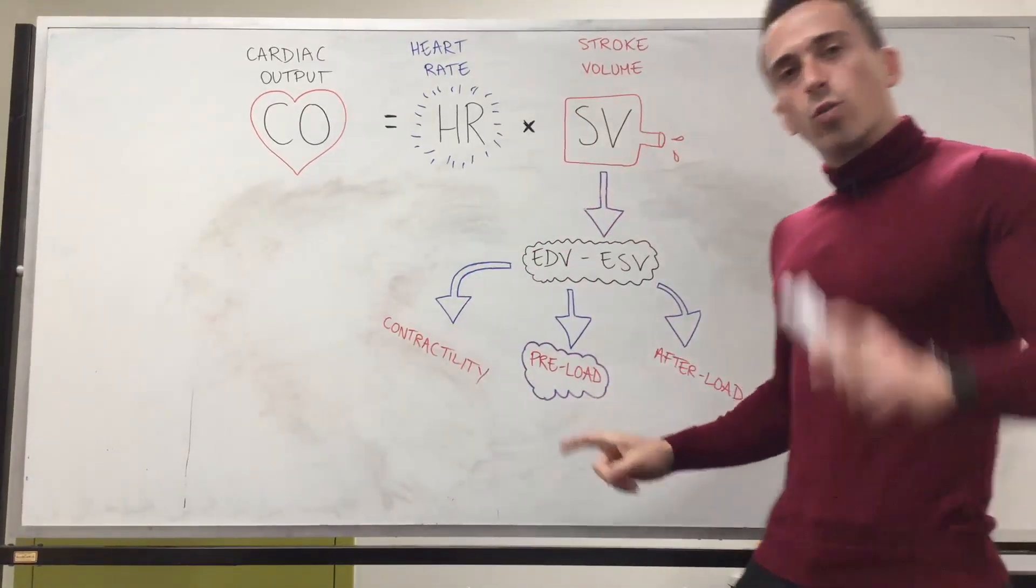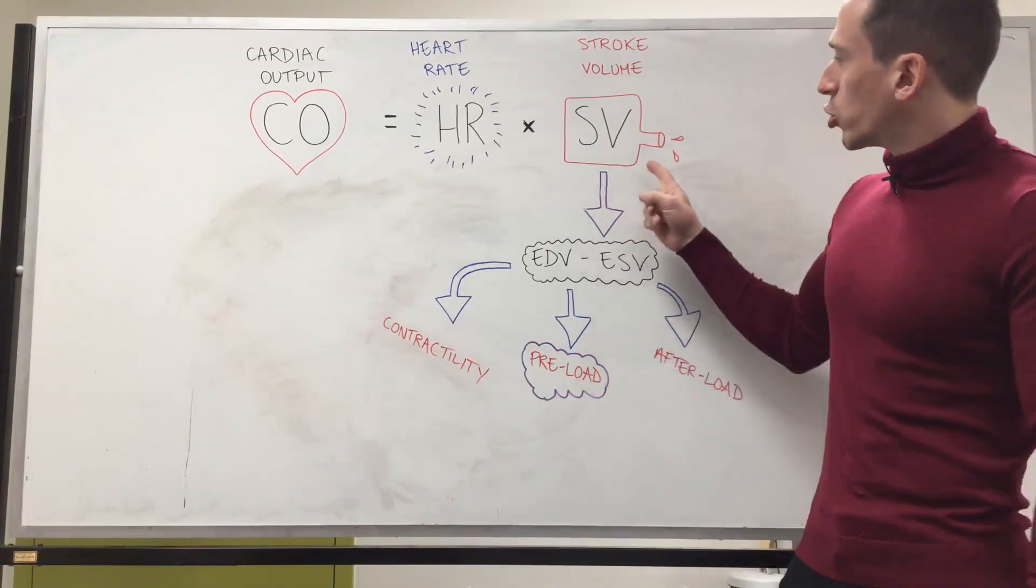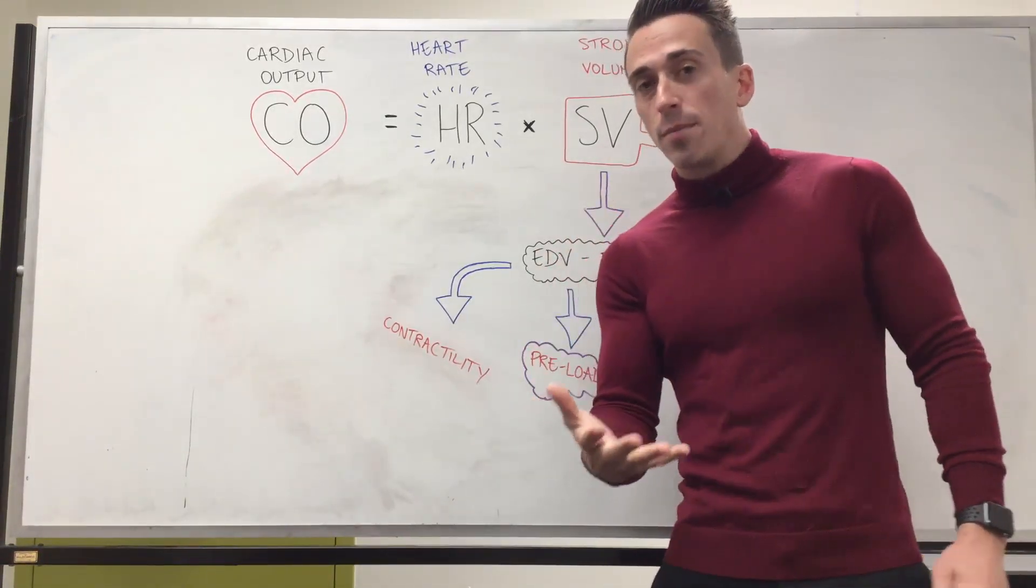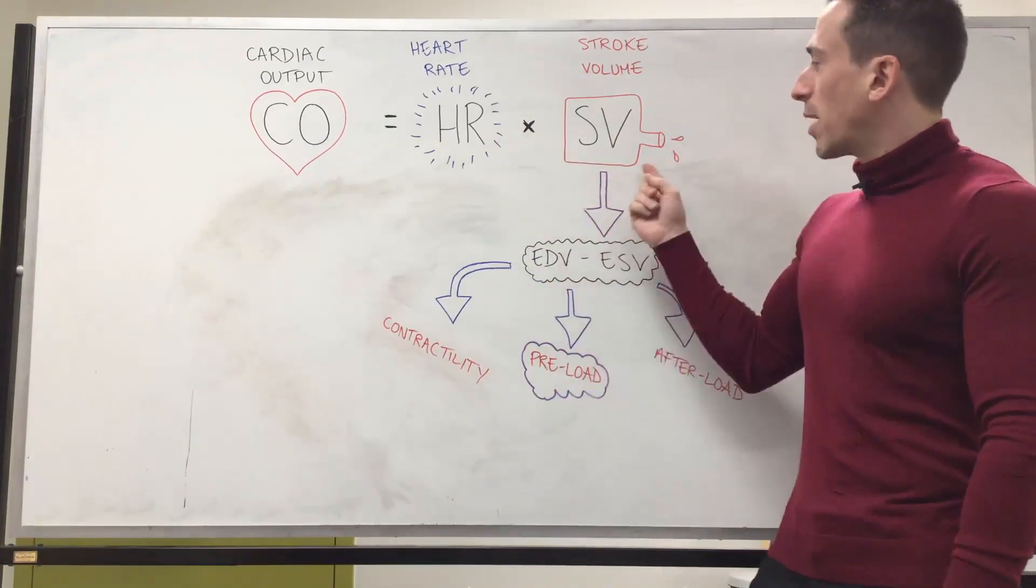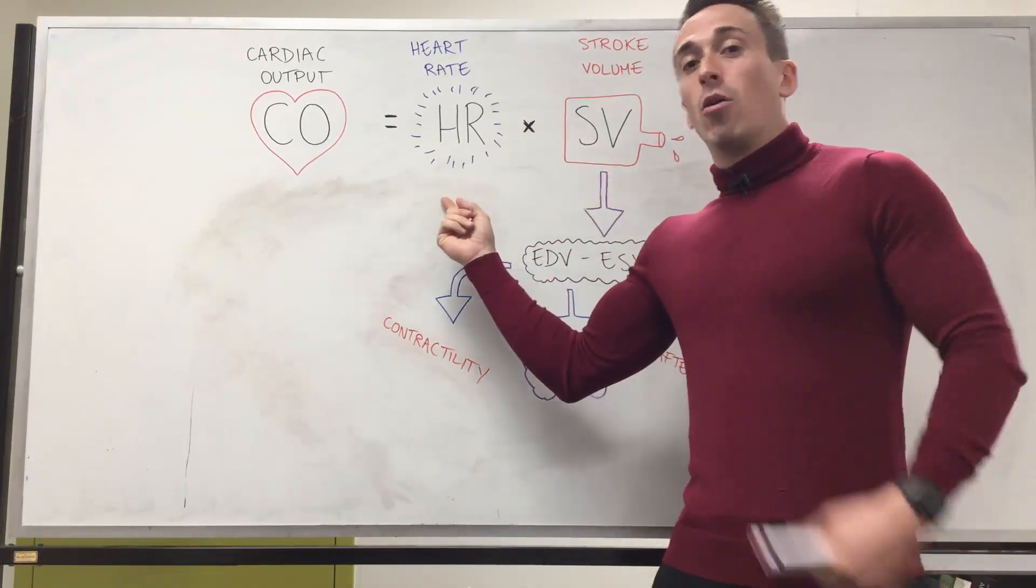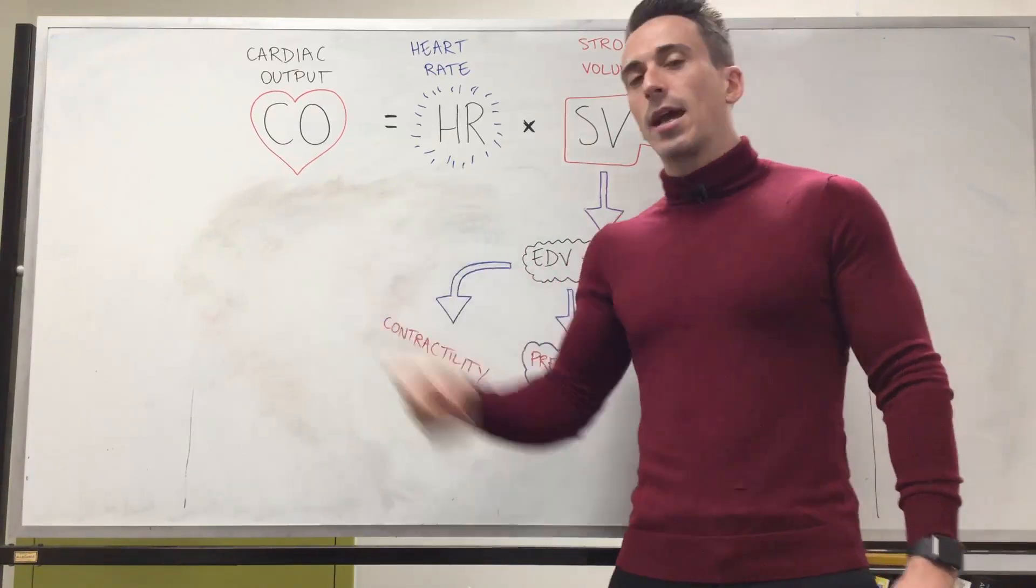Now preload, it's one of the factors that influences stroke volume. What's stroke volume? Stroke volume is the amount of blood our heart pumps out every contraction. So you multiply that by how many times our heart beats per minute and we get our cardiac output.